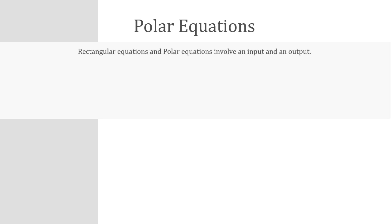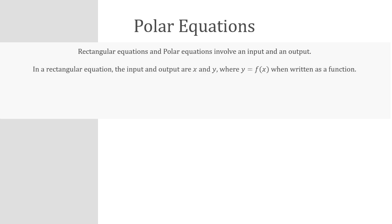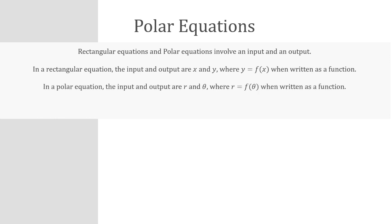Like rectangular equations, polar equations involve an input and an output. In a rectangular equation, the input and the output are typically x and y, where when written as a function we might say y equals f of x. For a polar equation, the input and the output are r and theta, where when written as a function we would say r equals f of theta.